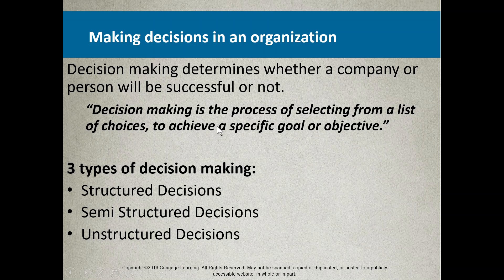What we want to do is make the best possible decision for an organization for a particular issue. To start with the basic ideas: there are three types of decision-making — structured, semi-structured, and totally unstructured decision-making.